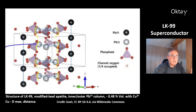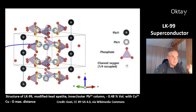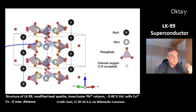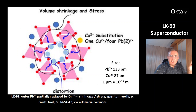This is the structure of LK99 — it's a modified lead apatite. There are inner and outer lead columns of lead ions. The doping with copper causes a volume reduction of 0.48%. There was theoretical work that predicted that the oxide ions in the middle prefer a maximum distance from the copper ions, which partially replace the outer lead ions. You can see the volume shrinkage caused by the smaller copper ions that substitute the outer lead ions partially.